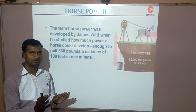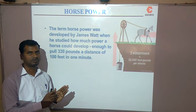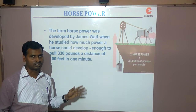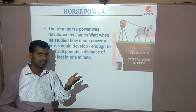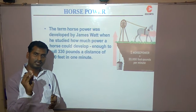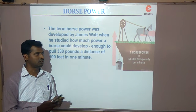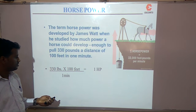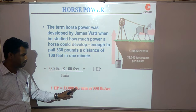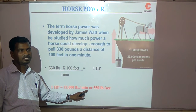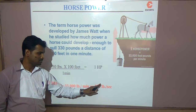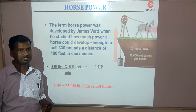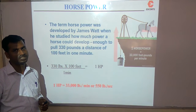Why was horse selected to compare engine power? In those days, horses were known for pulling loads or carts. By comparing the engine with a horse, people could relate to the steam engine's power. That is how he selected the horse for this exercise. So one horsepower equals 33,000 pound-feet per minute, or 550 pound-feet per second. Horsepower is the unit of power.